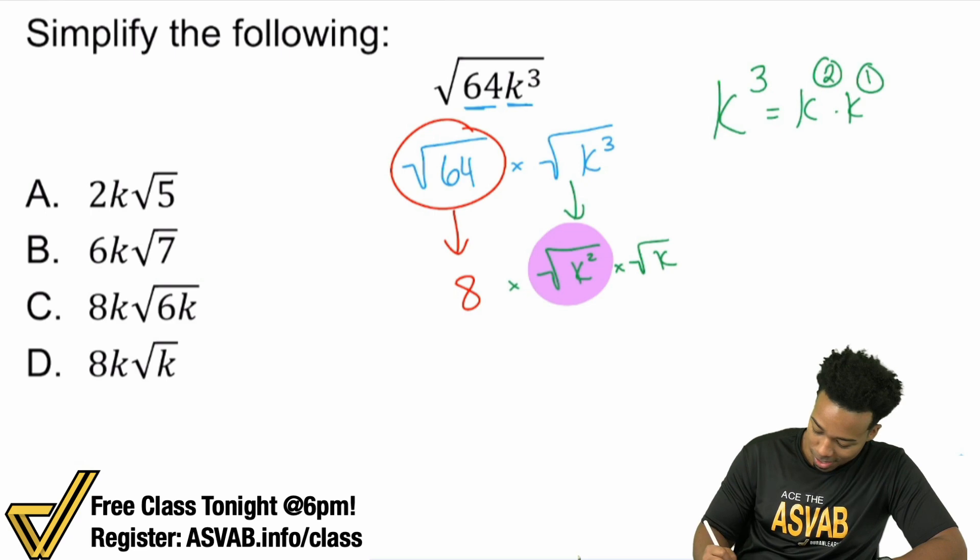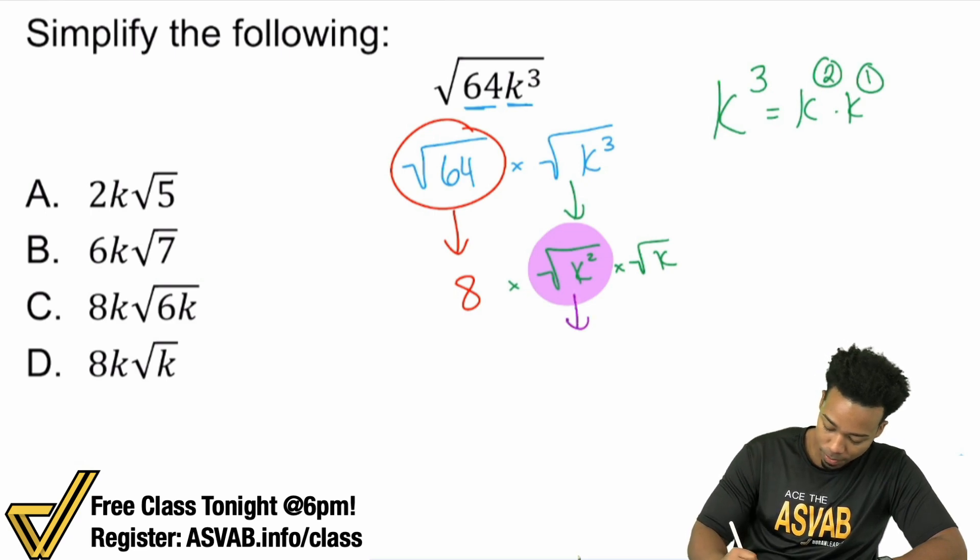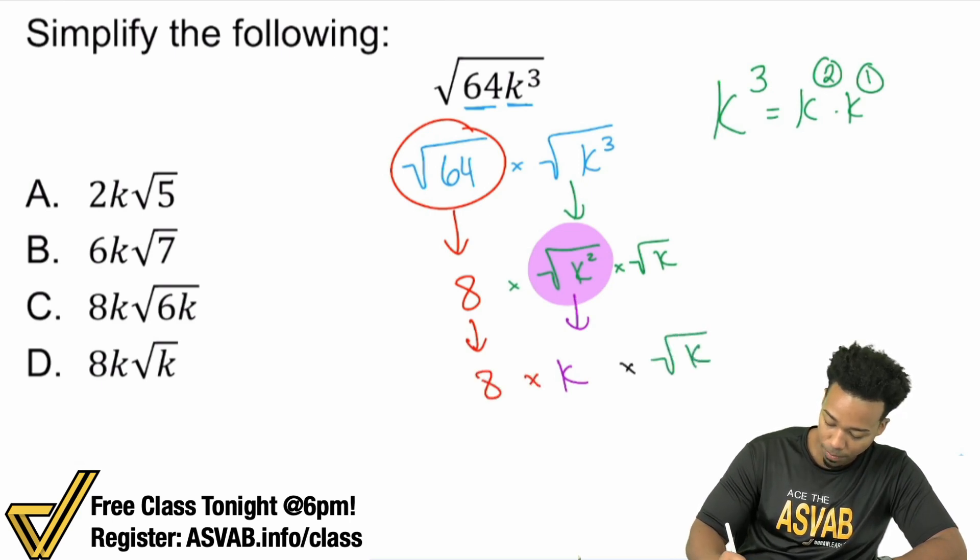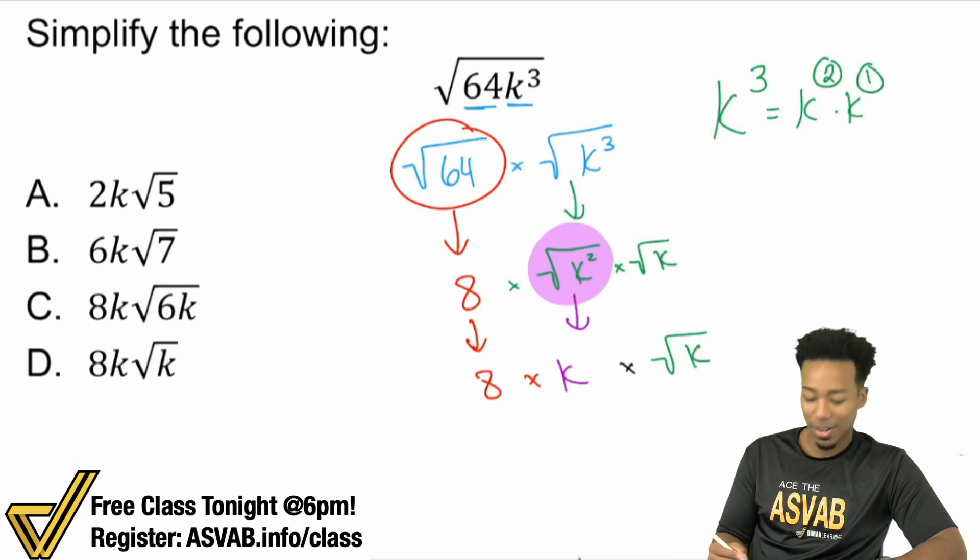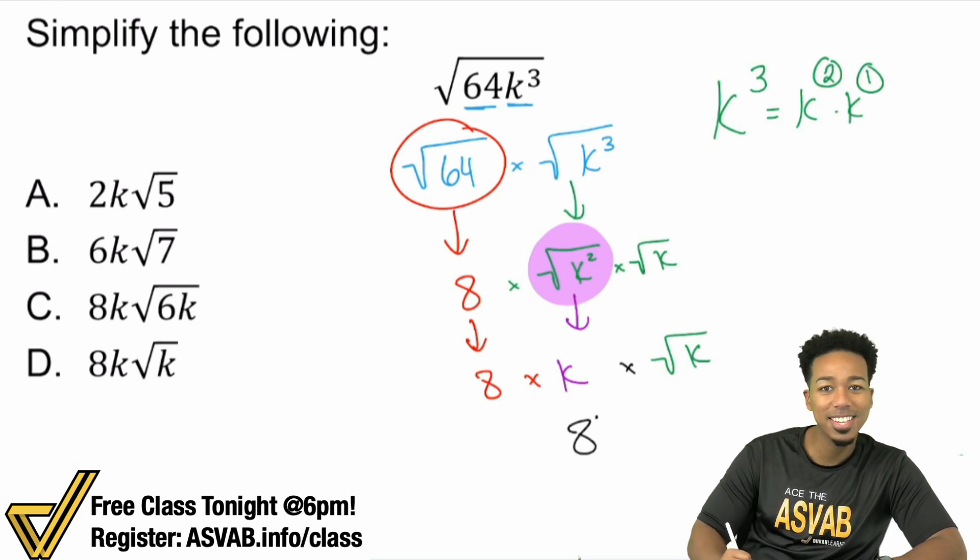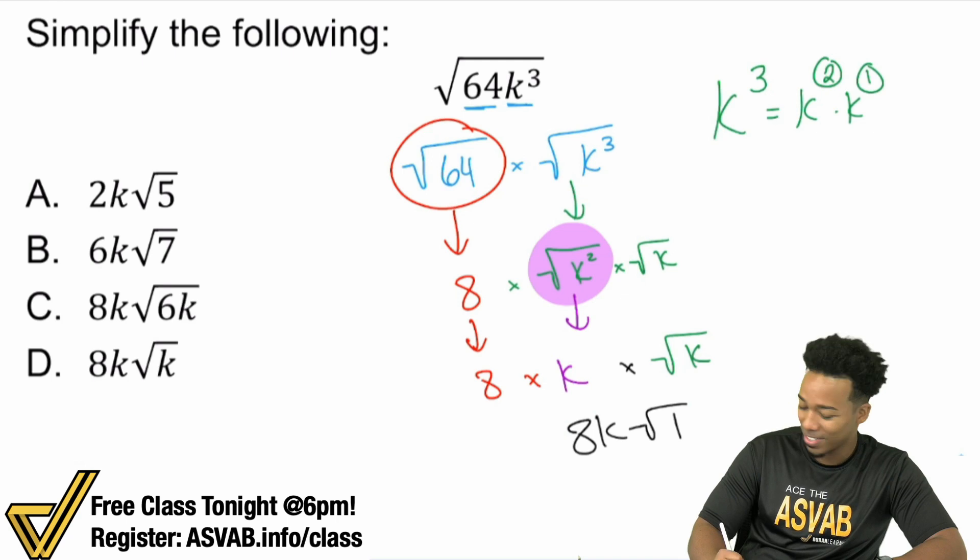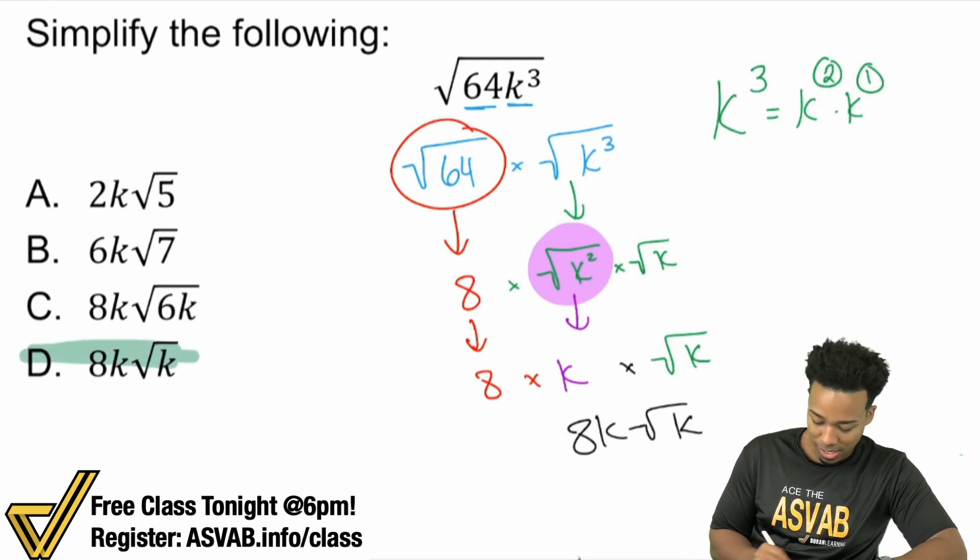And now think of it like this. When you ask yourself what number times itself gives you k², well, that's just going to be k because k multiplied by k gives you k². And so this can actually reduce to just k. And so we have our 8 multiplied by k multiplied by that square root of k. That's going to be our answer: 8k√k. And that is answer choice D.